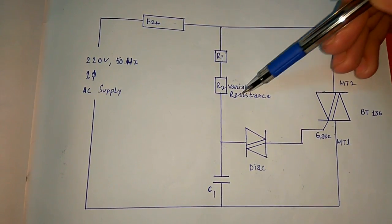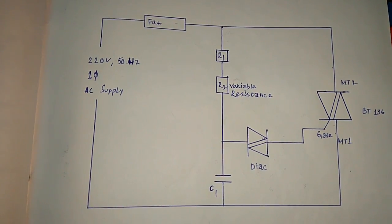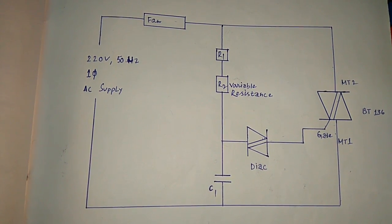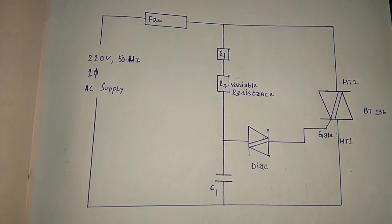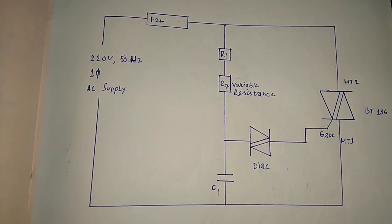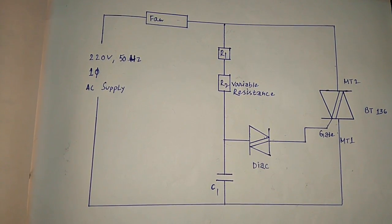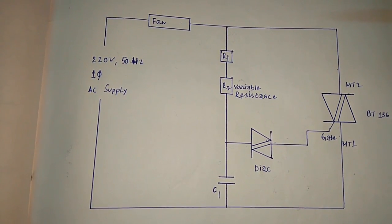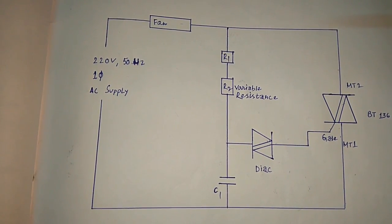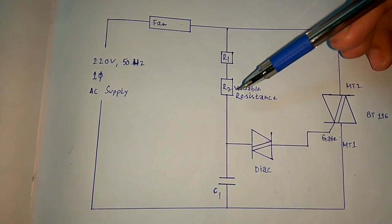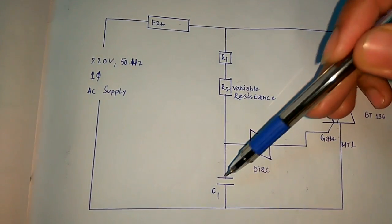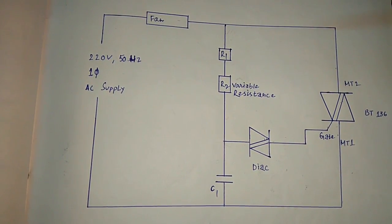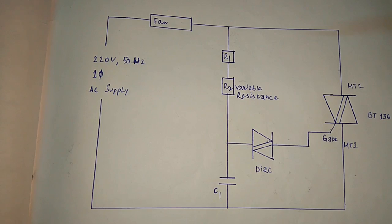By varying the potentiometer or this variable resistance R2, the rate at which this capacitor is going to be charged gets varied. This means that if the resistance is less, the capacitor will charge at a faster rate, so the earlier will be the conduction of TRIAC.